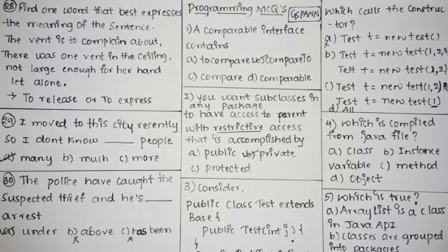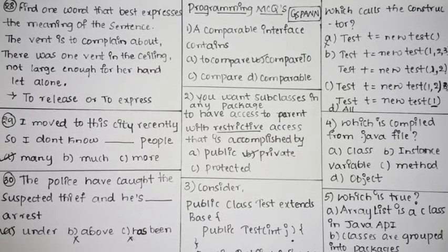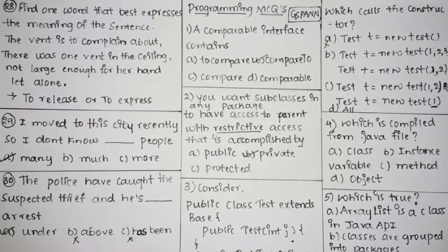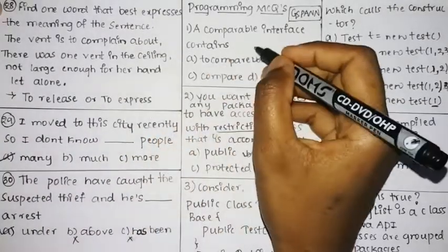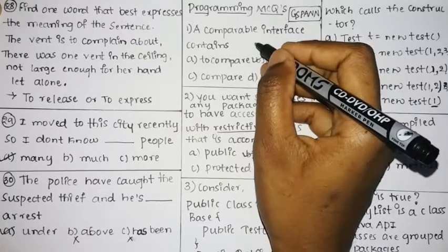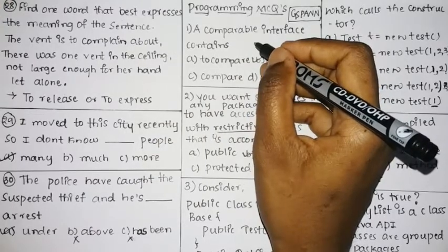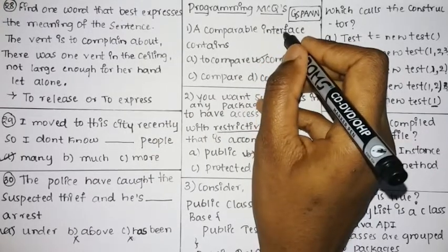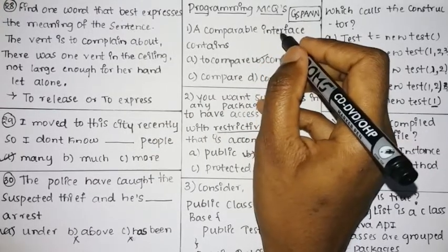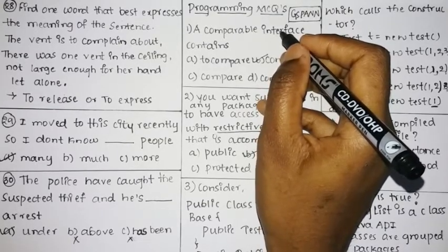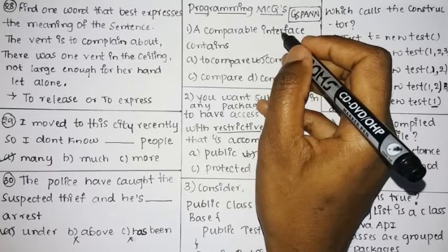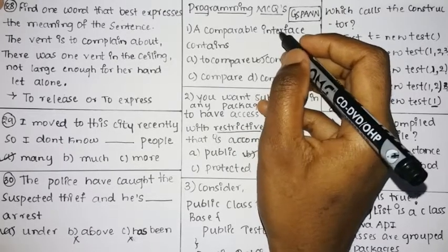Hello friends, welcome to Insight Learners. In this video we shall continue with the next questions of the English communication test — there are three remaining questions. Once that is done, we shall move towards the programming MCQs, which are 10 questions asked in GSPAN. Then we shall see the coding question, and later the logical reasoning and quantitative aptitude questions.